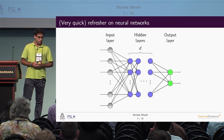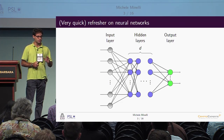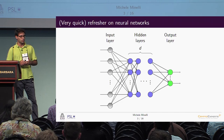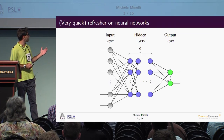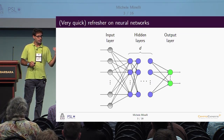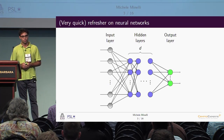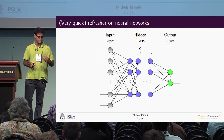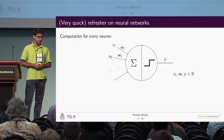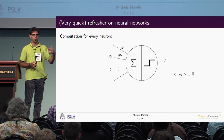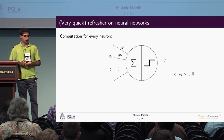A quick refresher on neural networks: neural networks are collections of computational units called neurons, which are arranged in several layers. We have an input layer that receives inputs from the external world, then several hidden layers whose number defines the depth of the model, and then an output layer that communicates the result back to the external world. Looking at one single neuron, there are inputs Xi's coming in on wires associated to weights Wi.